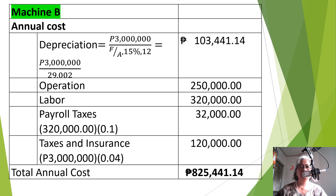For machine B, computing the annual cost using the same sinking fund depreciation method, we get $103,441.14 per year. The total annual cost for machine B is therefore $825,441.